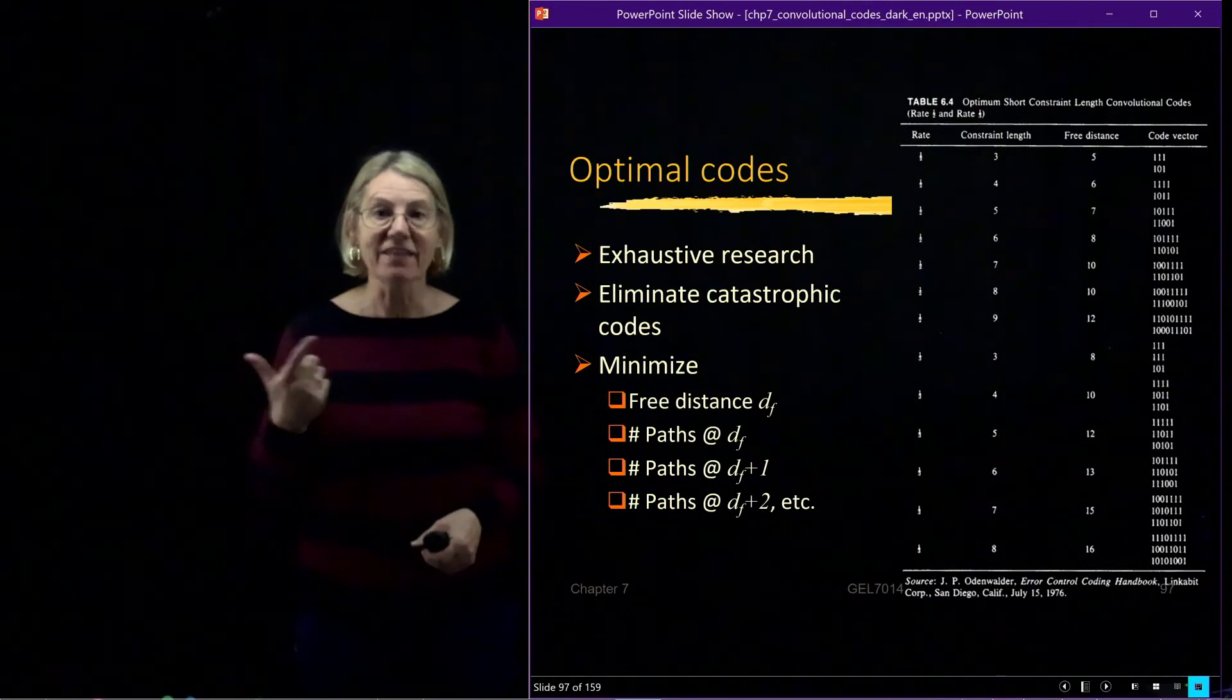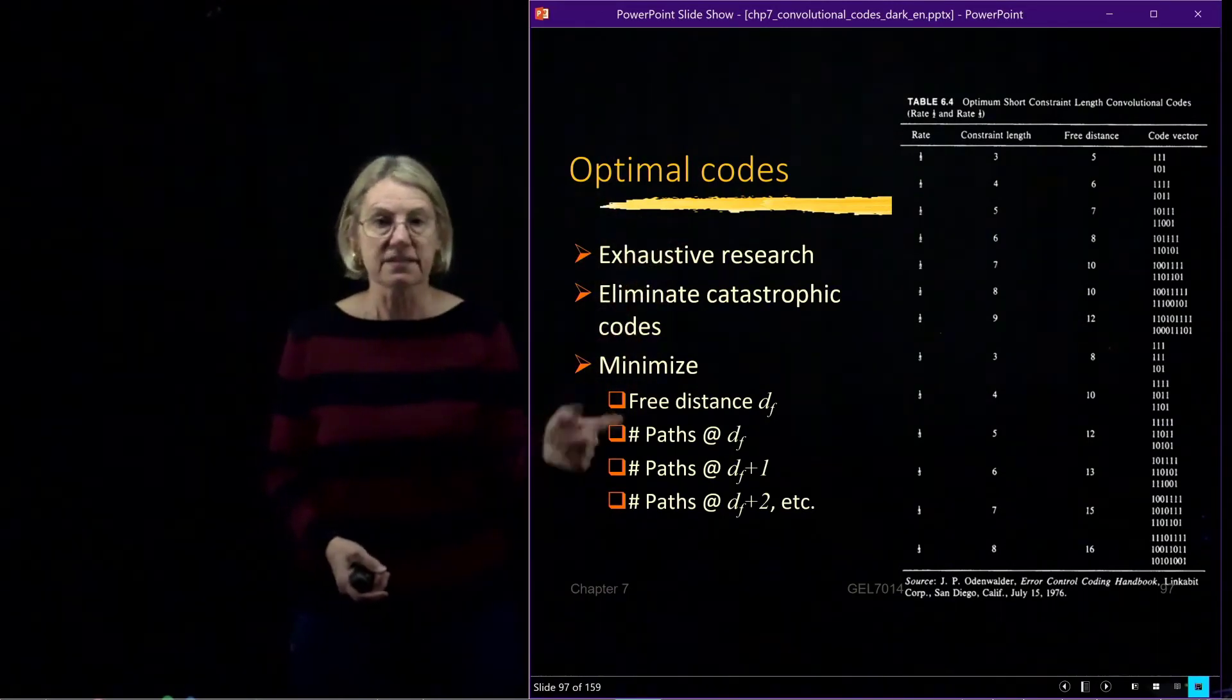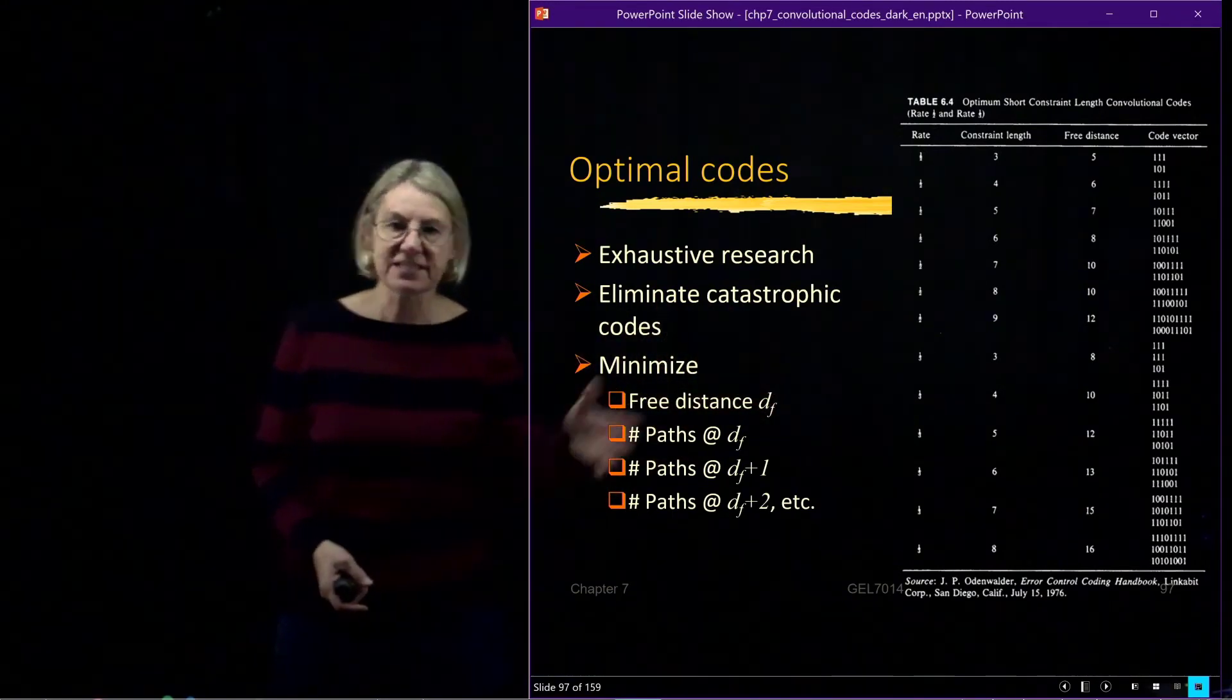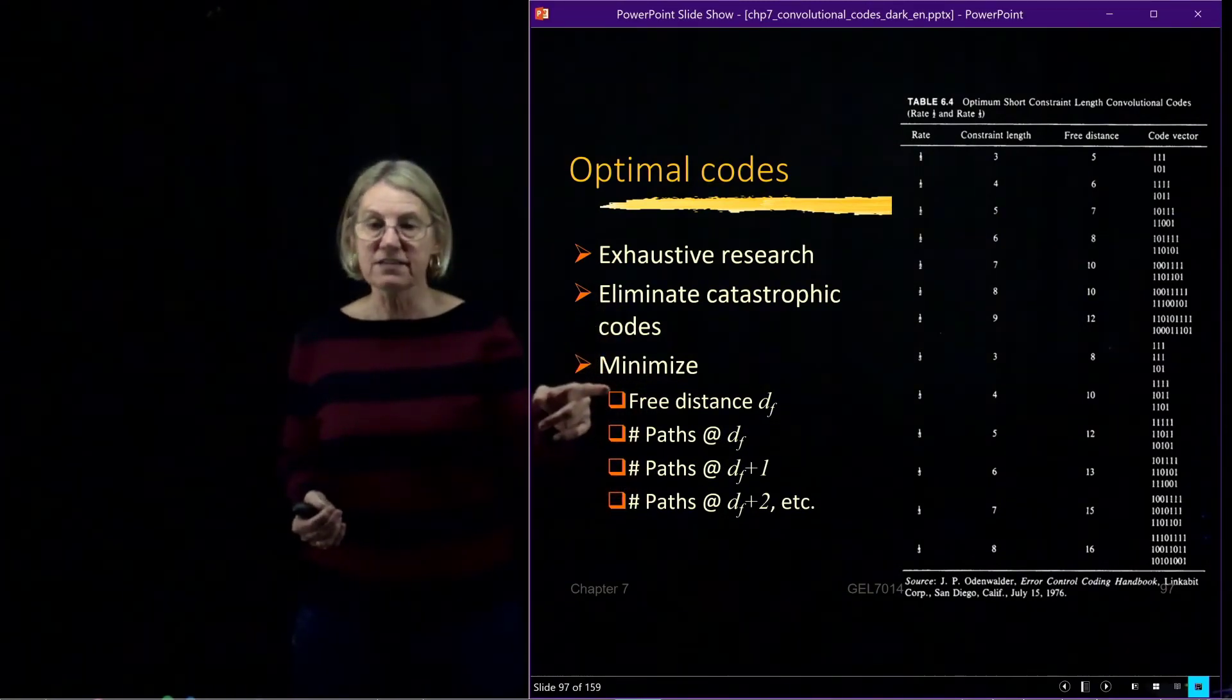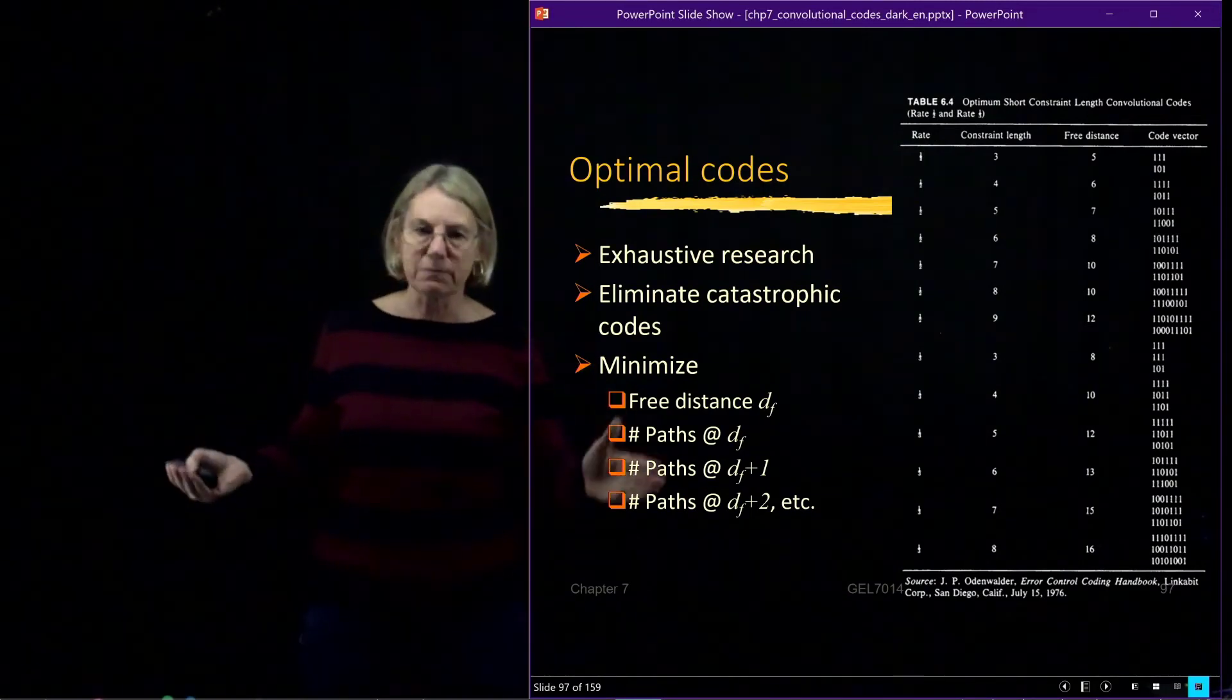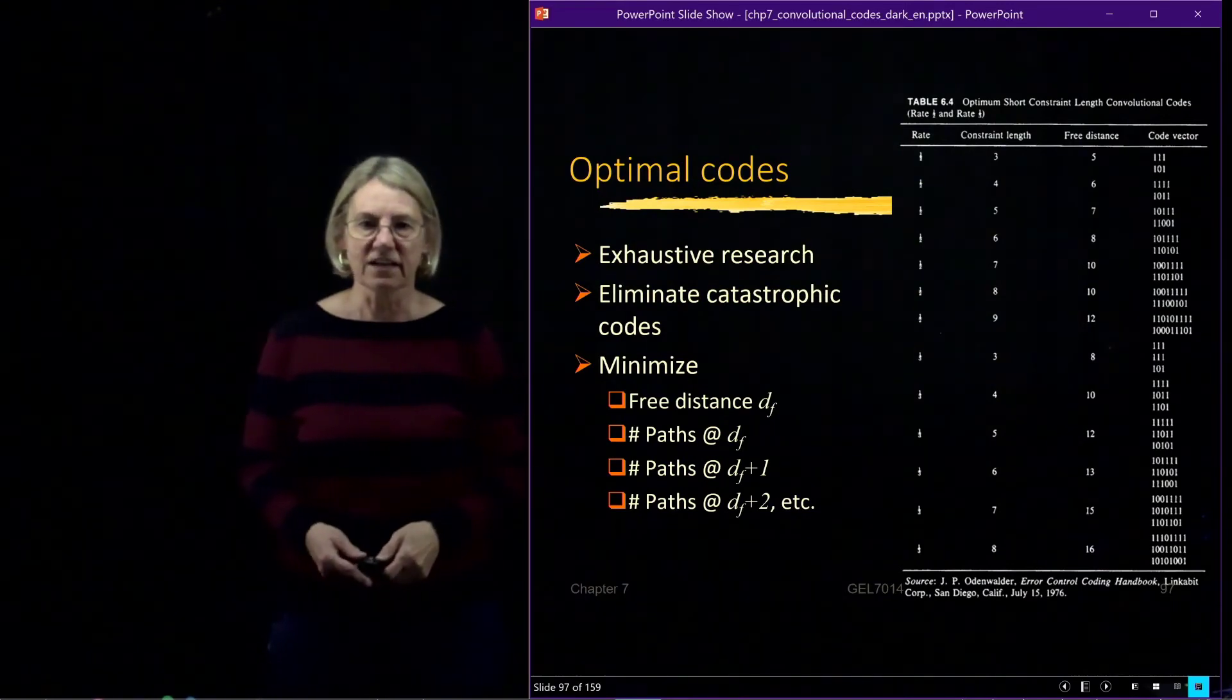And then once it has the free distance, you can say, well, how many paths are at that free distance? Remember, we had to go through all the different possibilities of the different paths. Well, there might have been where there were a couple of those which were at the free distance. And so it'll tell you how many paths. And then say, well, what if I had one worse? Or one better, I guess I would say. What about the free distance plus one? How many paths were that? So that if I was comparing two possible codes and they both had the same free distance, well, I would pick the ones that had fewer paths at the free distance. And if they both had the same free distance and the same number of paths at the free distance, I would keep going like that. And so that would be how I would arrive at, finally, this list, which is the best one because I had compared them on all of these categories.